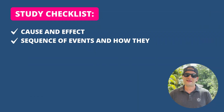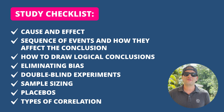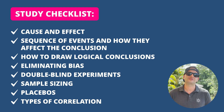For data analysis and interpretation, it's about understanding and identifying cause and effect — for example, grams of sugar consumed and the resulting level of insulin. Understanding the sequence of events and how they affect the conclusion is tested on the T7 exam. You'll also need to know how to draw logical conclusions through eliminating bias, double-blind experiments, sample sizing, placebos, and identifying positive, negative, and no correlation.